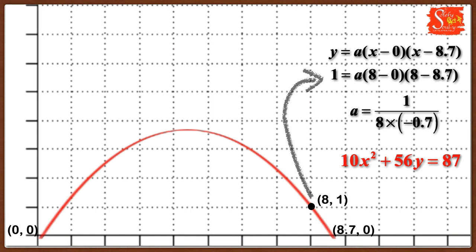Now this process of finding the equation is called mathematical modeling, and this equation 10x² + 56y = 87 is the mathematical model of the trajectory of that soccer ball. Thank you.